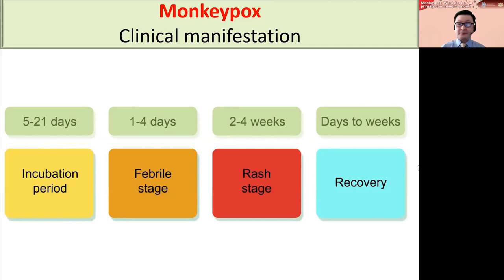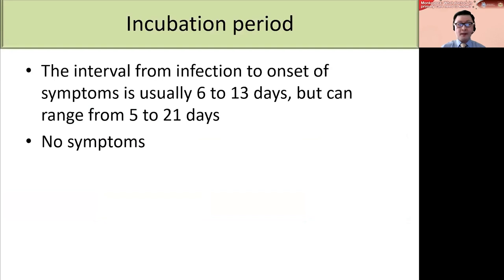The clinical manifestation of monkeypox can be divided into four phases, namely incubation period, followed by febrile stage, rash stage, and recovery phase. The incubation period, or the interval from infection to onset of symptoms, is usually six to 13 days, but can range from five to 21 days. During this stage, the patient is typically asymptomatic.